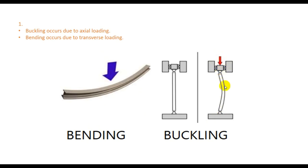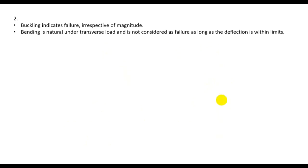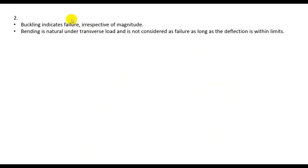These types of displacement are known as buckling, and these types of displacement are known as bending. If the deflection occurs due to transverse load, it is known as bending. If the deflection occurs due to axial load, it is known as buckling.